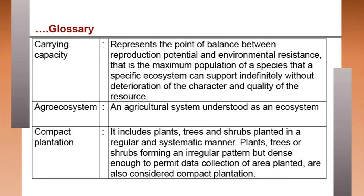Agroecosystem is an agricultural system understood as an ecosystem. Compact plantation includes plants, trees and shrubs planted in a regular and systematic manner. Plants, trees or shrubs forming an irregular pattern but dense enough to permit data collection of area planted are also considered compact plantation.